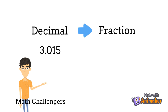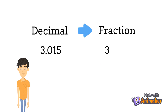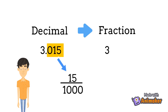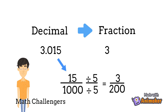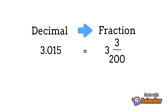Let's do another one. What is 3 and 15 thousandths in fraction? The digit on the left side of the decimal point is the whole number. The digits on the right side are the fraction part — 15 becomes the numerator, and since there are 3 digits on the right, the denominator is 1000. Since 15/1000 can be reduced (both divisible by 5): 15 ÷ 5 = 3 and 1000 ÷ 5 = 200. Therefore, 3.015 in lowest term is 3 and 3 over 200.